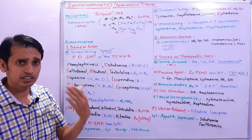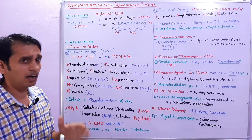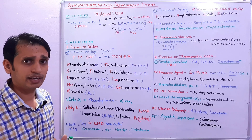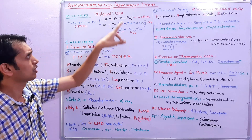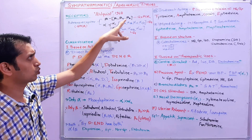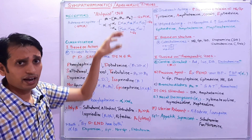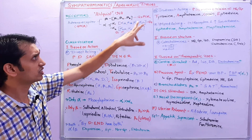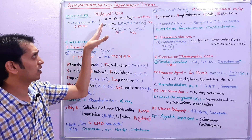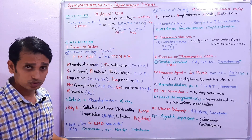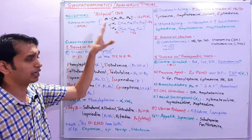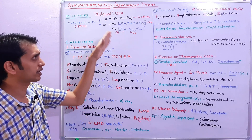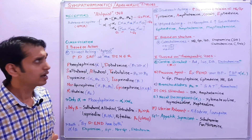After further studies, alpha and beta are divided into various subtypes. Beta has three subtypes: beta-1, beta-2, and beta-3, and they are a type of Gs-PCR. Alpha is divided into two types: alpha-1 and alpha-2. Alpha-1 is basically a Gq-PCR.